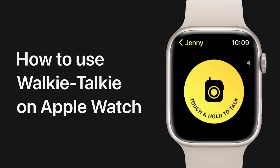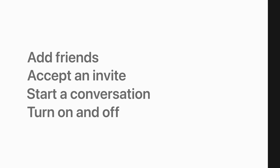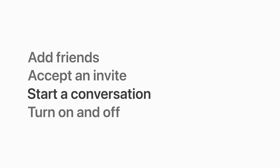If you and your friend each have an Apple Watch and a Wi-Fi or cellular connection, you can use Walkie Talkie to quickly contact them and have a conversation no matter how far away you are. In this video, we'll show you how to add friends in Walkie Talkie, accept an invite from a friend, start a conversation, and turn it on and off.